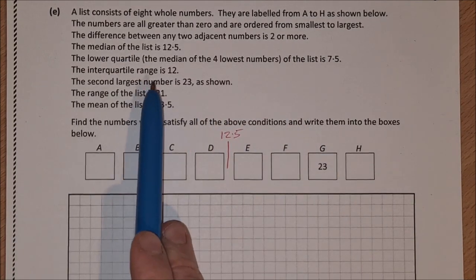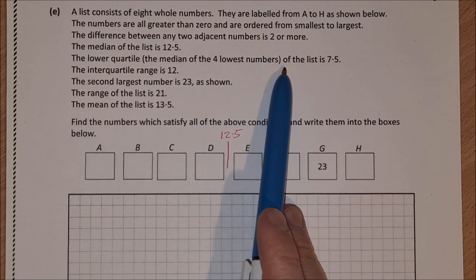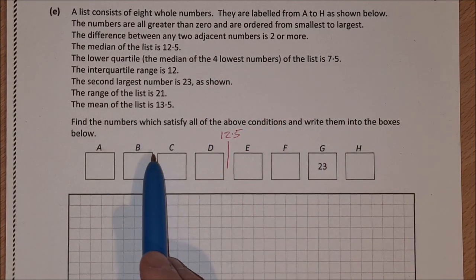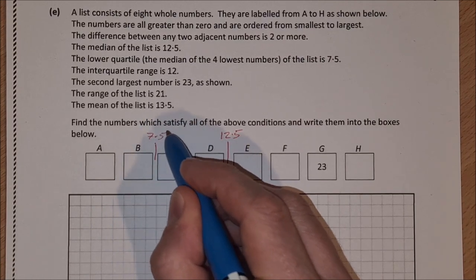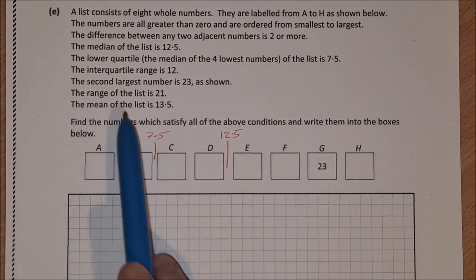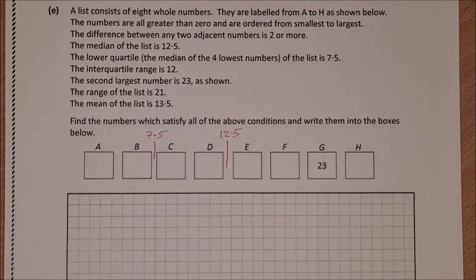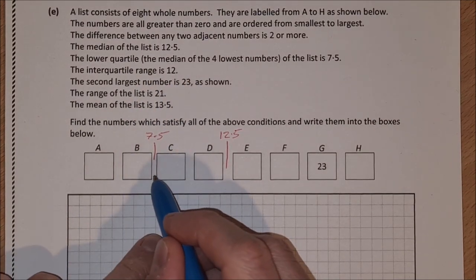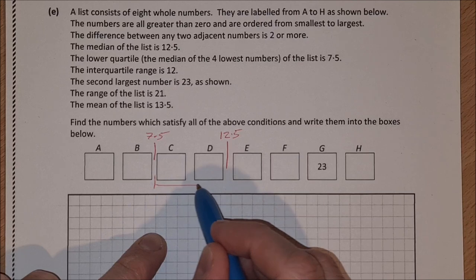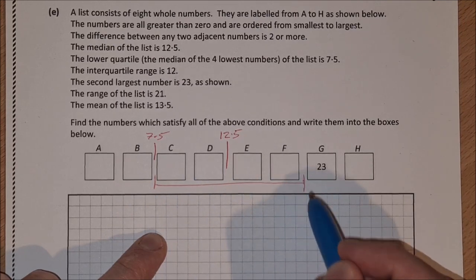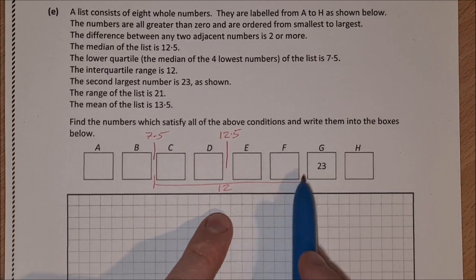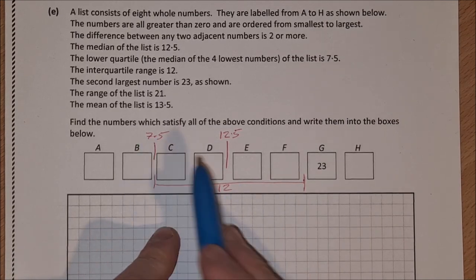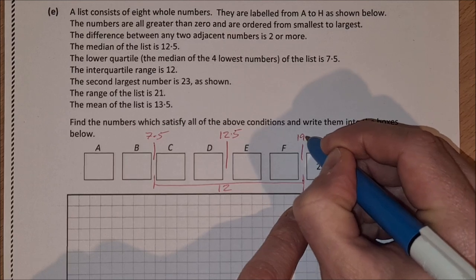The lower quartile, which is the median of the four lowest numbers, is 7.5. So that's in between these two, B and C. That's 7.5. The interquartile range is 12. The interquartile range is the difference between the lower quartile and the upper quartile, which is here, and the difference between them is 12. So that means the upper quartile is 12 plus 7.5, which is 19.5.